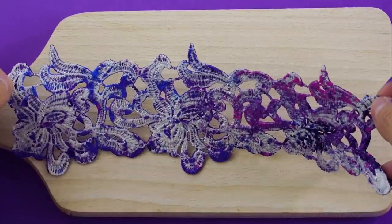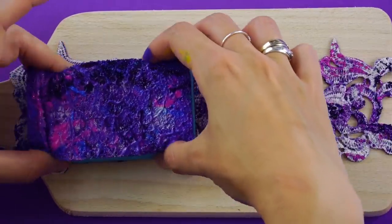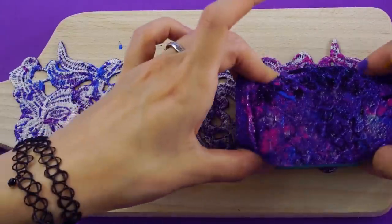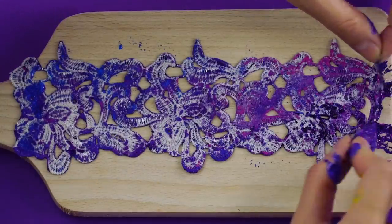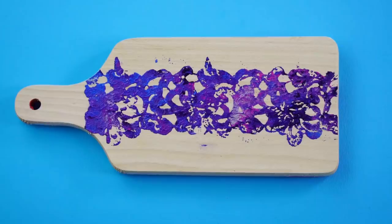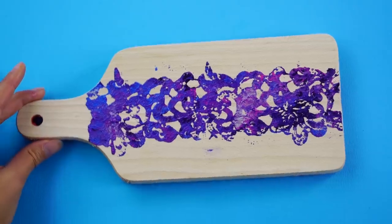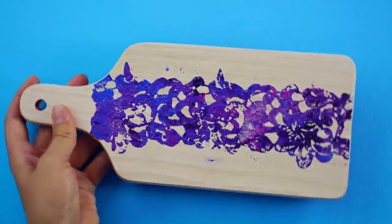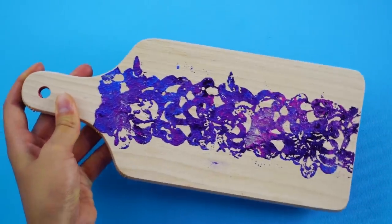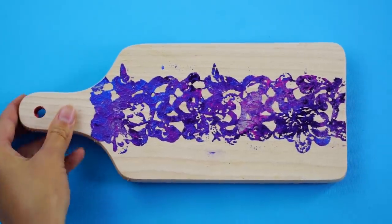Carefully apply the lace to the center of a wooden cutting board. Gently push the lace design onto the cutting board with the sponge. Then lift the lace up to see the colorful art underneath. Once it's dry, you can hang it in your kitchen. Everything is awesome!